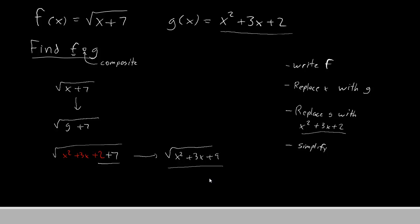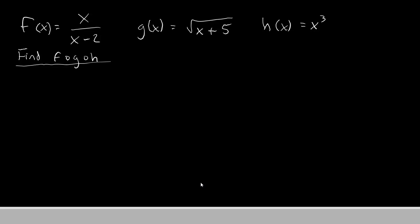This one was a bit simple, so we'll do a slightly more complex example. Here we have three functions. x over x minus 2, root x plus 5, and x cubed. And this question says to find f composite g composite h.